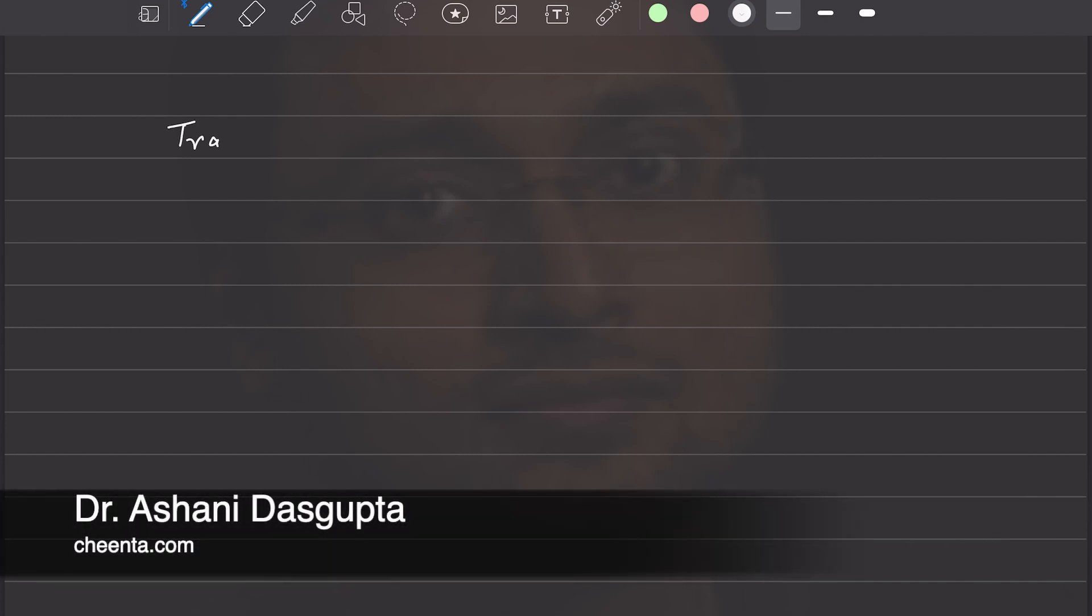Let's learn about transformation of equations. We will do that using a problem from ISI BSTAT VMAC entrance 2021. This is objective problem number two. It's a very beautiful problem.